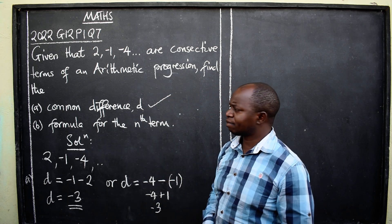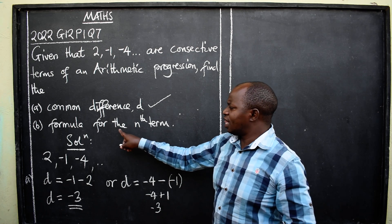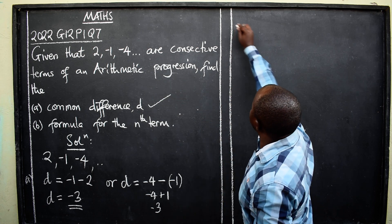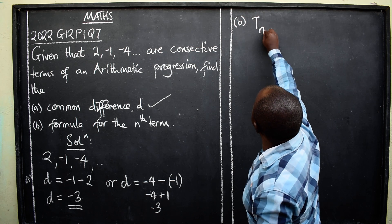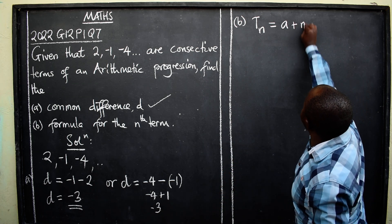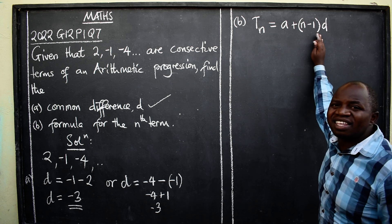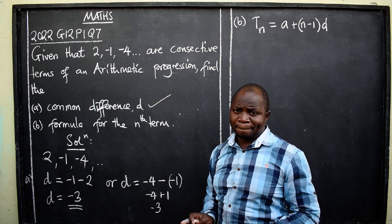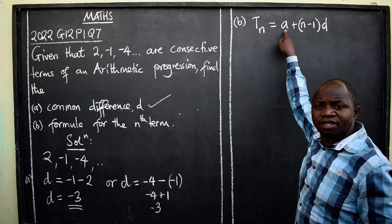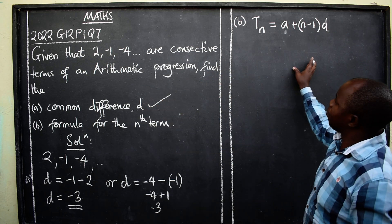We have answered the first part. Next: the formula for the nth term in arithmetic progression. The nth term in any arithmetic progression is always given by: a plus (n minus 1) times d. Don't forget this formula. After writing this formula, substitute a — which represents the first term — and d — the common difference — then simplify.